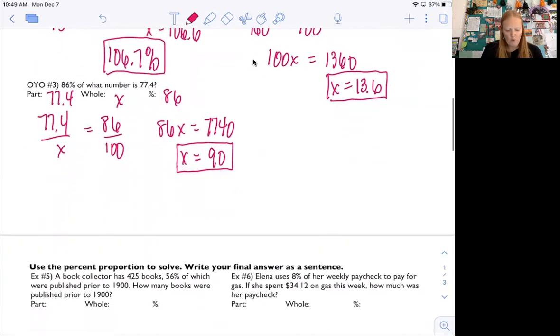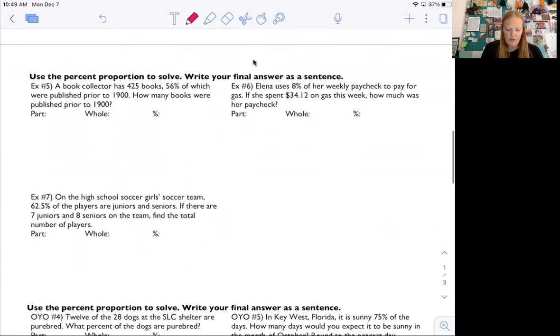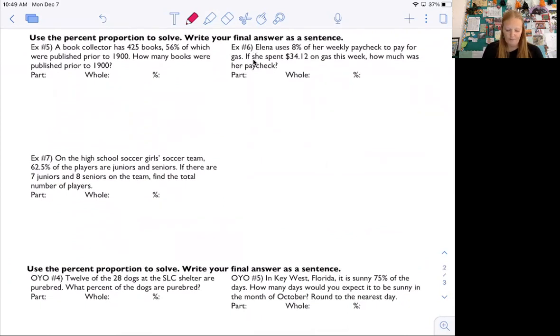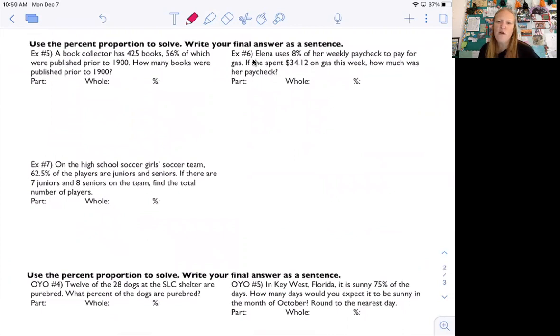So now let's look at how to use these in like a real life situation. So when we read the problems, we have to try to figure out which number represents the whole thing and which number represents the part. Because they're not going to give us the words of and is this time. We just have to think about, well, which is bigger, the people in seventh grade that are right-handed or all the people in seventh grade. All right. So for number five, a book collector has 425 books, 56% of which were published prior to 1900. How many books were published prior to 1900?